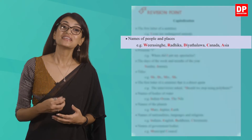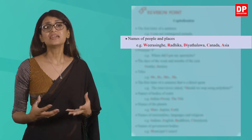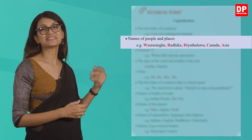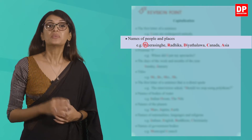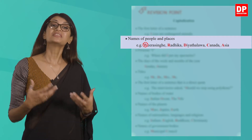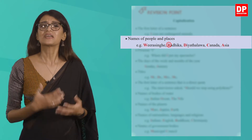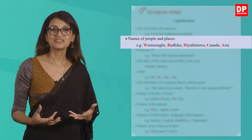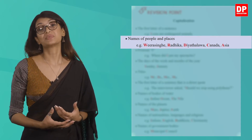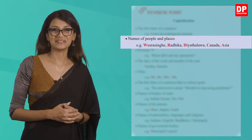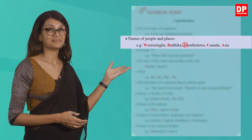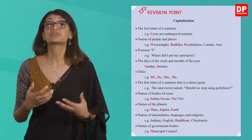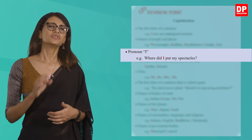This rule is pretty straightforward and shouldn't be too difficult to remember. The second rule given in your pupils' book is the capitalization of proper nouns, or rather names of people and places. To help you understand this rule, they've given examples: 'Verasingha,' which is a surname, starts with a capital letter; 'Radhika,' a first name, also starts with a capital letter. Names of places, countries, and regions also start with capital letters — for example, Delhi, Lava, Canada, and Asia.